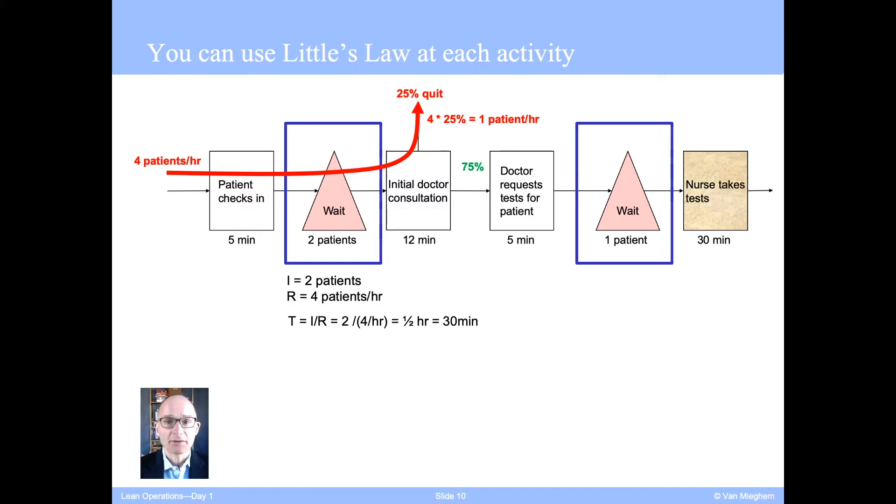The remaining 75% of the patients continue the process throughout, and their throughput, of course, is the remaining three patients per hour. So the point I want to make here is that it is beneficial to differentiate that we actually have two types of patients. Let's focus on the second buffer. We now know that the throughput through the second buffer is only three patients per hour. So a similar calculation now is one patient is the inventory, throughput is three patients per hour, and that shows us directly that the average wait in the second buffer is 20 minutes.